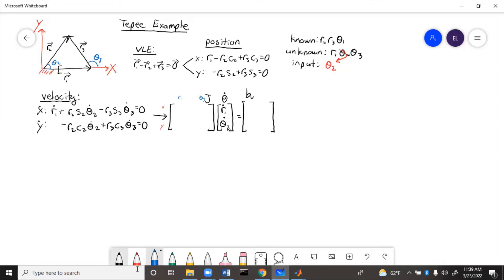So now we look for coefficients. The coefficient of R1 dot in the X equation is just 1. And R1 dot does not show up in the Y equation, so it's just 0.